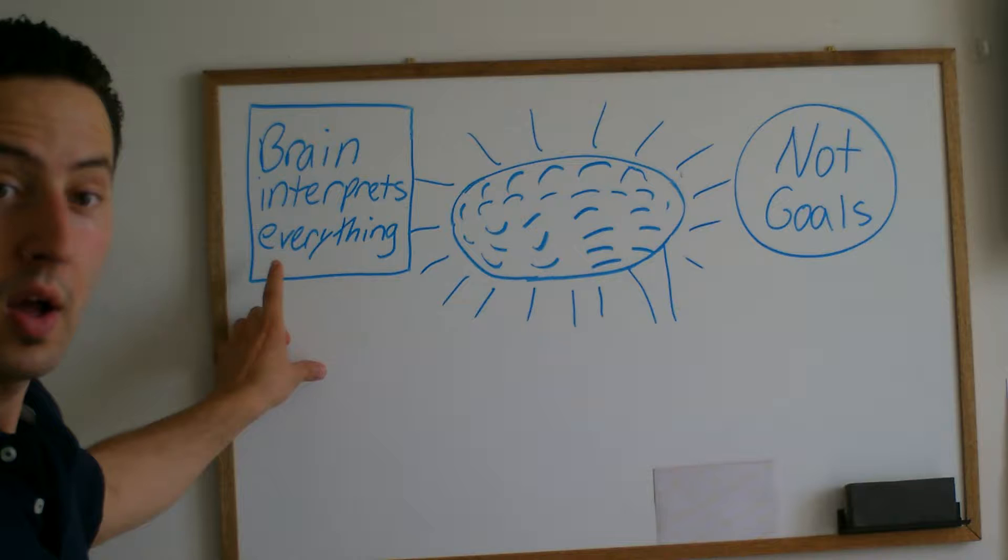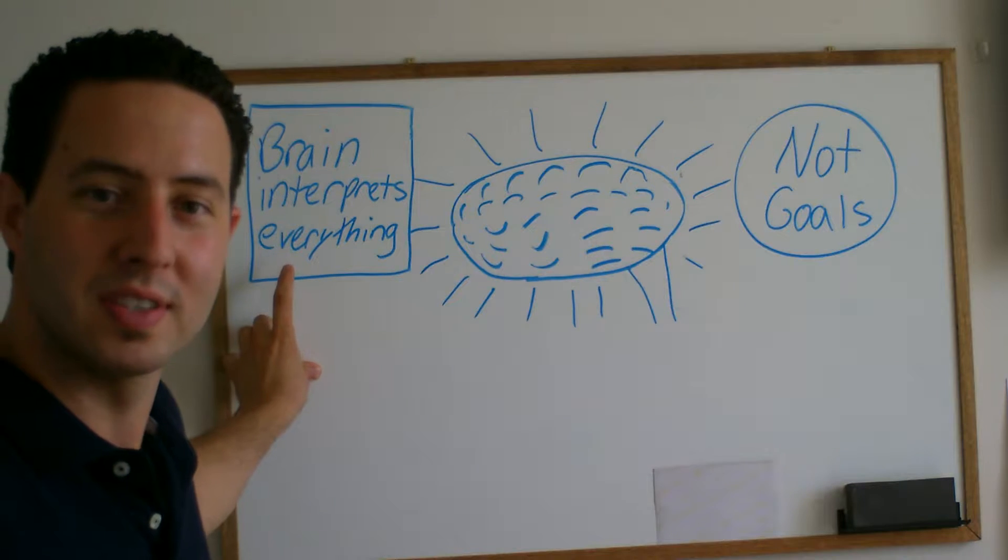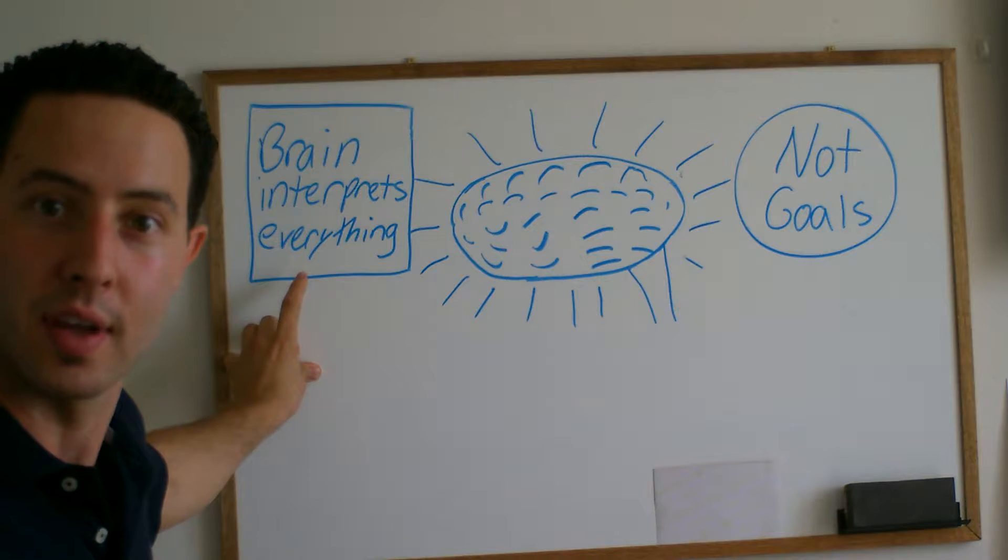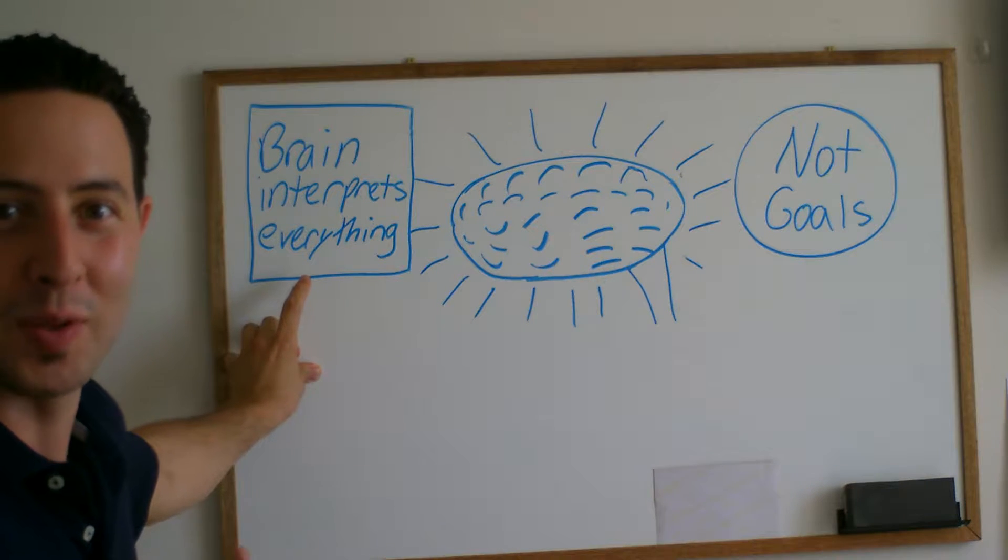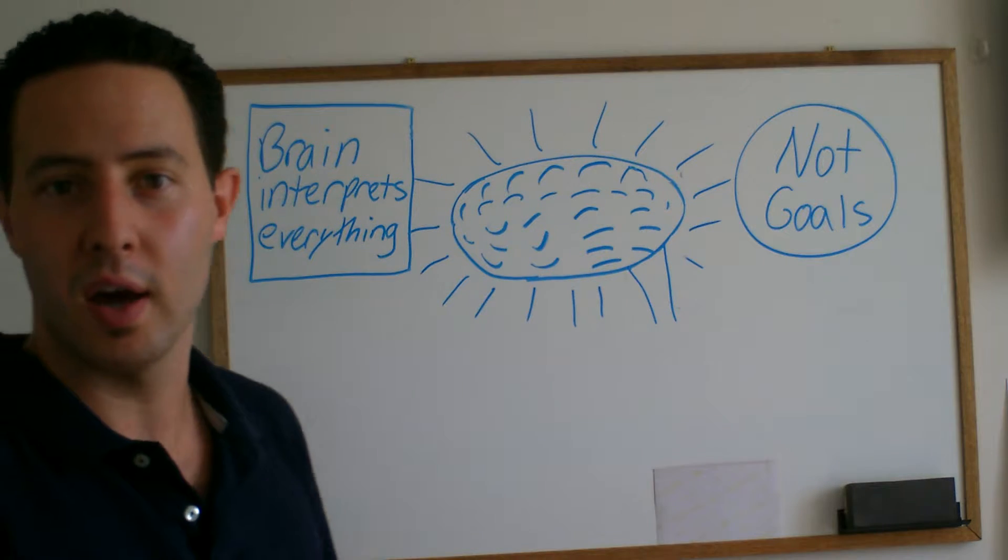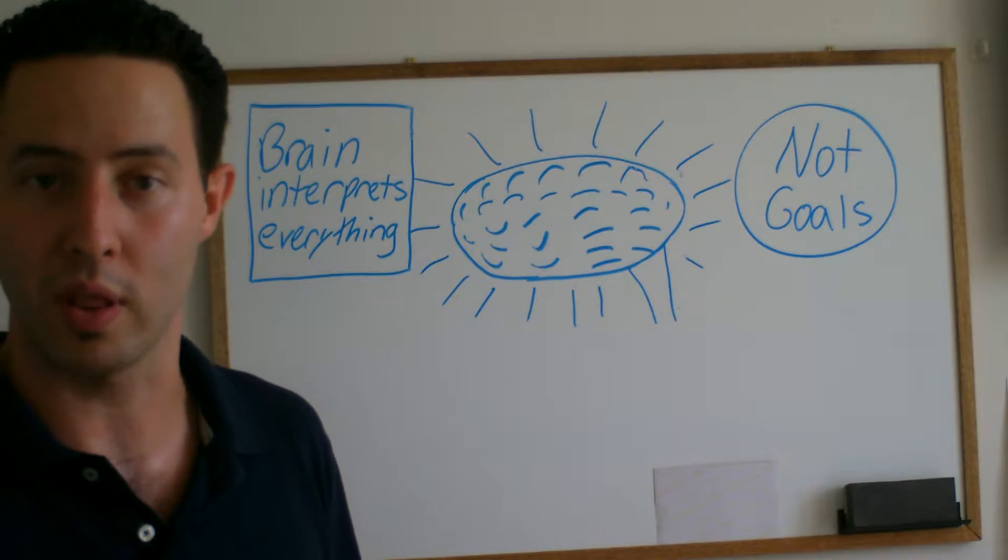The brain interprets everything—millions of bits of information every second, if you can believe it. The brain stores all of this information in the subconscious, which is really interesting because sometimes we think information is not important or not relevant.